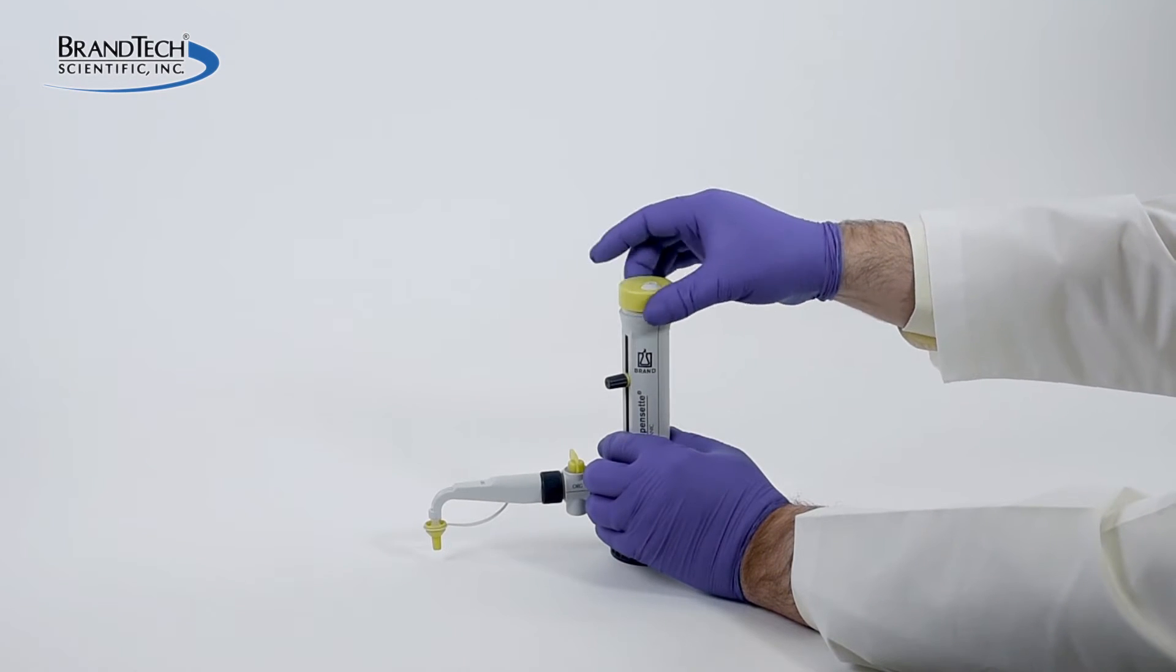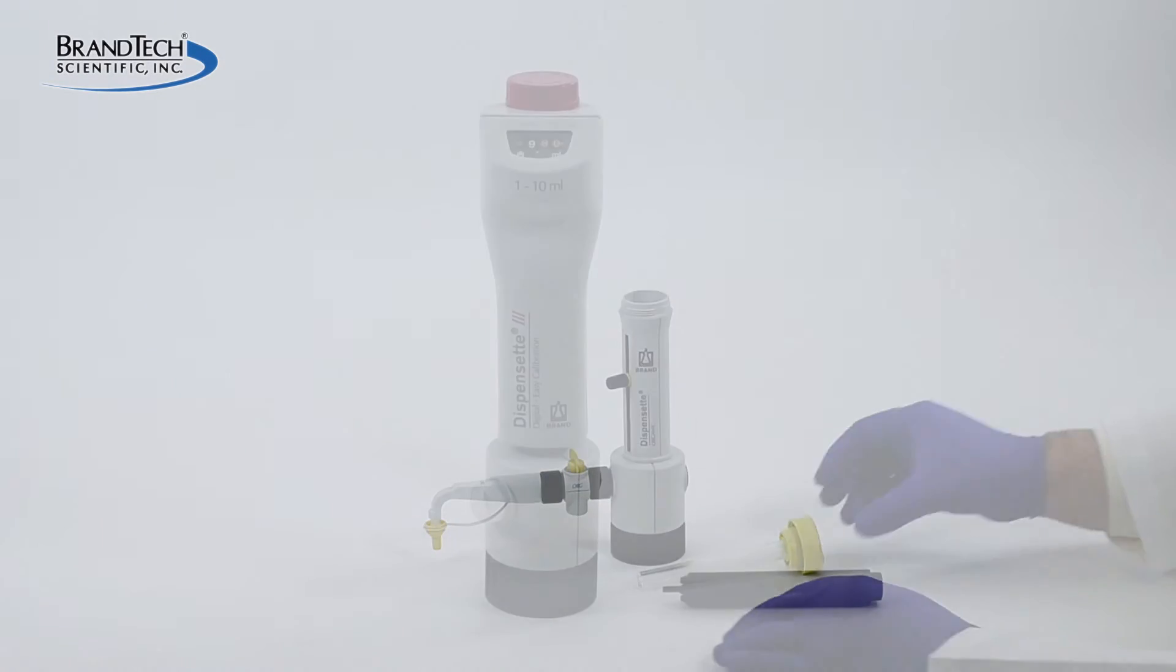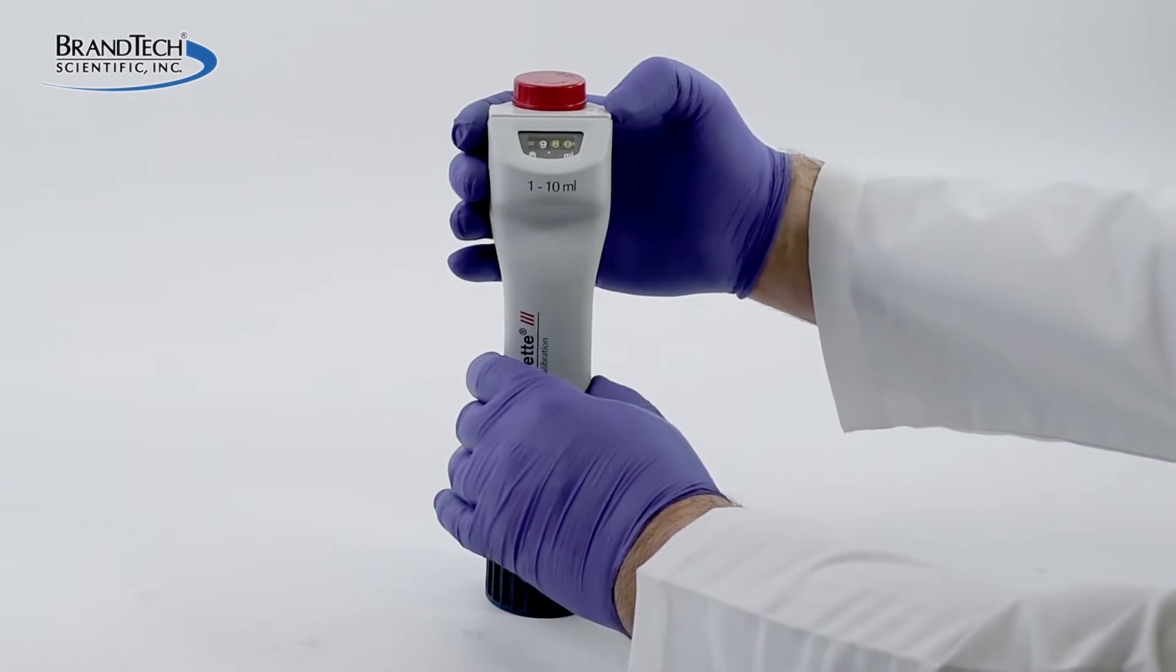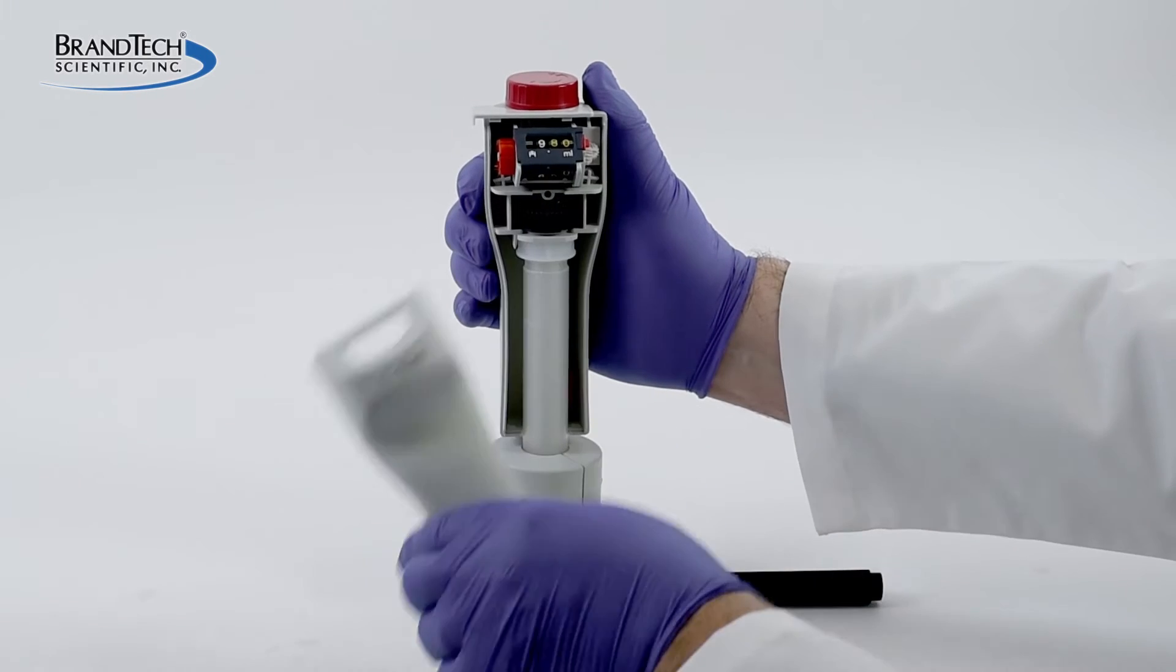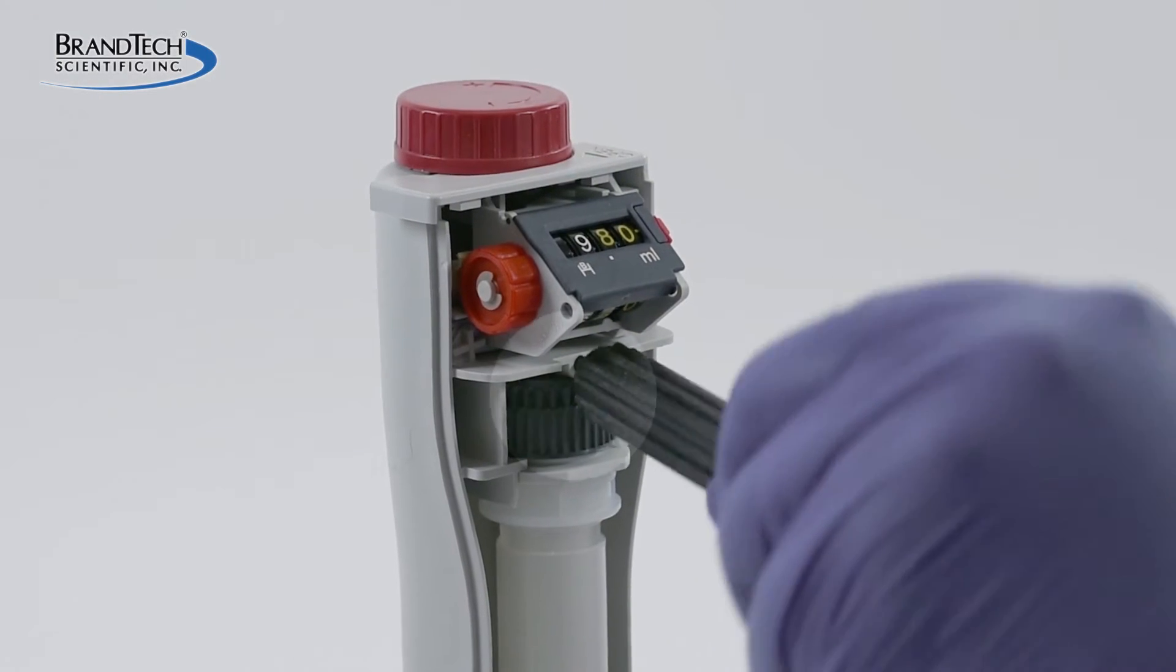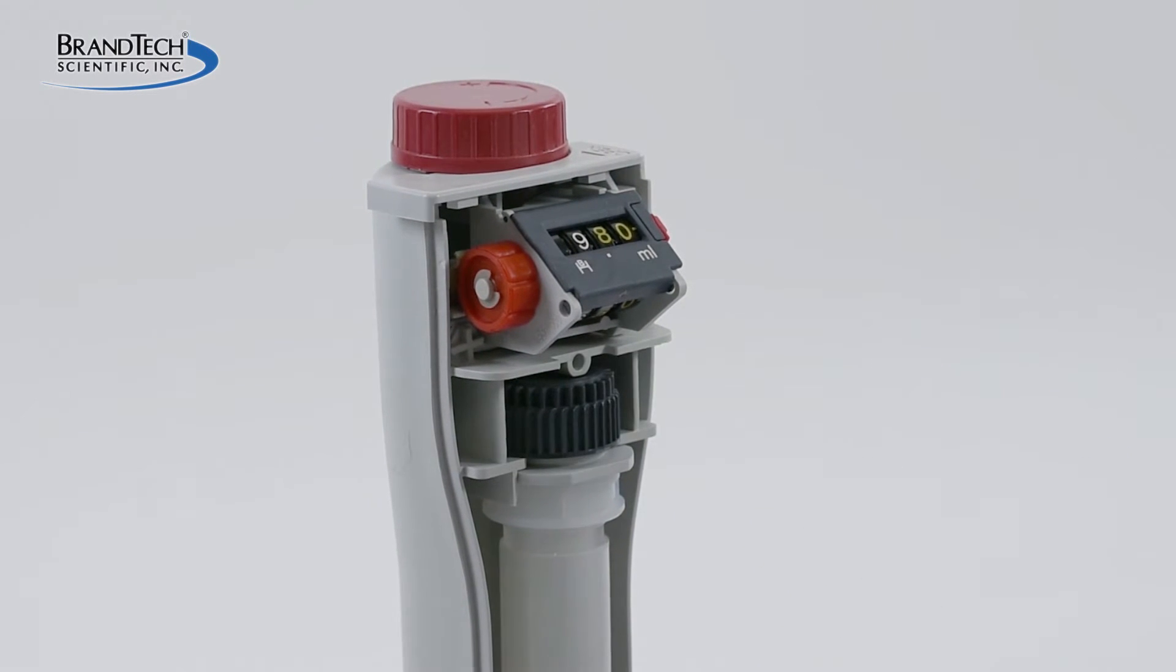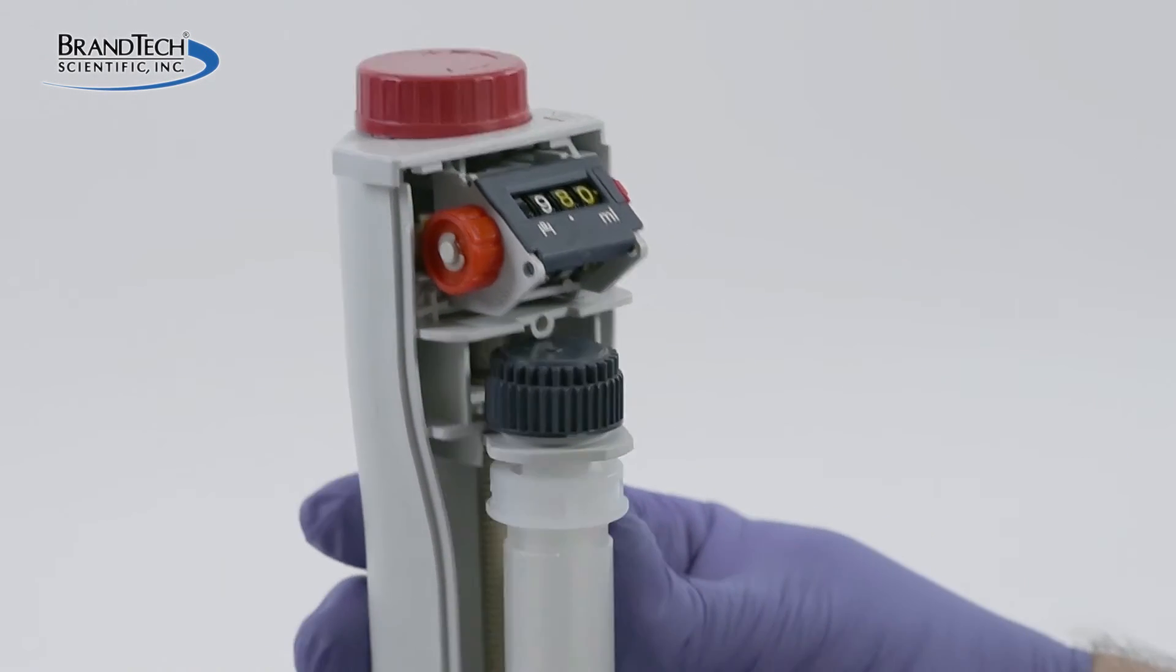If you have an analog or fixed volume, simply unscrew the piston from the cylinder sleeve. For a digital easy calibration model, slide the tab on the top of the housing to the left and use the black valve tool included with the instrument to loosen the cap on the top of the piston. The housing can then be slid rearward and the piston removed.